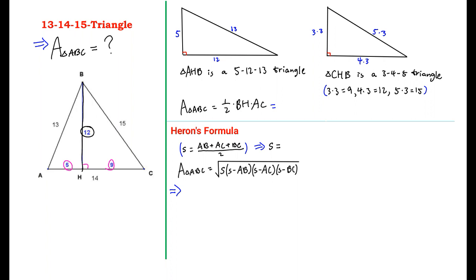Line BH also separates the triangle ABC into two separate right triangles: AHB and CHB. These two triangles are both special triangles because their ratios are always there. Let me explain.